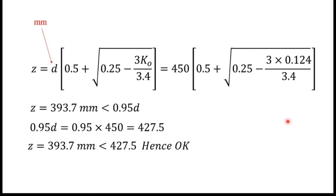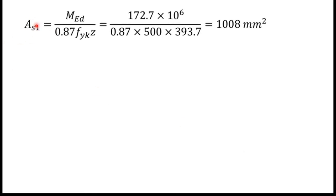Next we find the lever arm Z. Using the given equation with D in millimeters and the K value just calculated, substituting those values gives Z = 393.7 millimeters. We must verify this is less than 0.95·D. Calculating 0.95 × 450 = 427.5 millimeters. Since 427.5 is greater than 393.7, this Z value is acceptable.